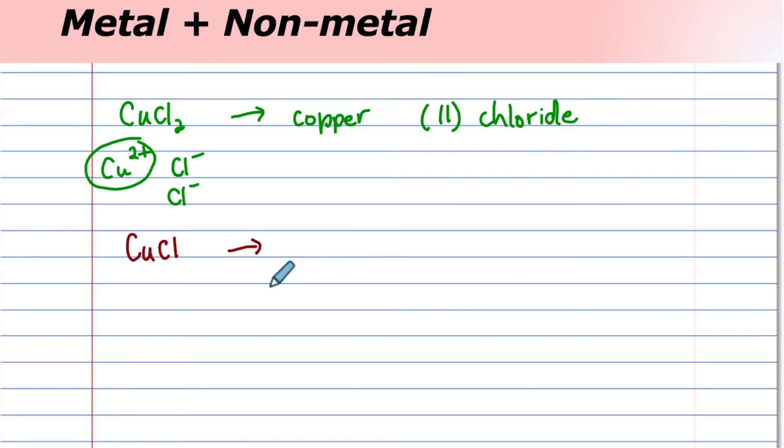Can you write the name of copper chloride written this way? Chlorine becomes chloride, copper. Because there's only one here and one here, this copper version must be the 1+ version. Therefore, the name becomes copper(I) chloride.